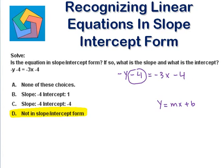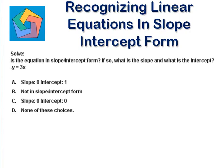Next problem: is the equation in slope-intercept form? If so, what is the slope and what is the intercept? The equation is -y = 3x. The slope-intercept form is y = mx + b, where y is positive. Here, y is negative, so this equation is not in slope-intercept form.